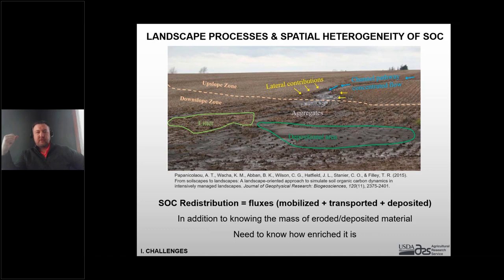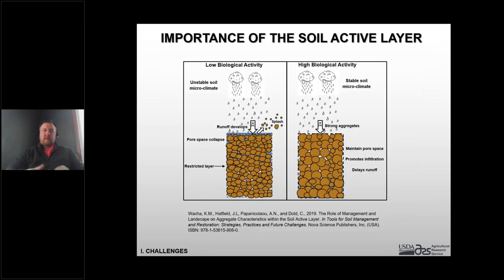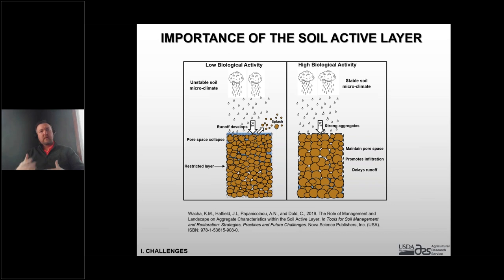Soil organic carbon redistribution — how material moves across the landscape — is often neglected. To tackle it, you need to know how much material is moving, but also how enriched that material is. Knowing that rainfall is becoming more intense, how we treat the soil active layer — that skin or interface — is critical. Protecting it with residue cover or canopies, promoting stronger resilient aggregates, and increasing microbial activity within the soil to build aggregation processes are going to have a big impact.